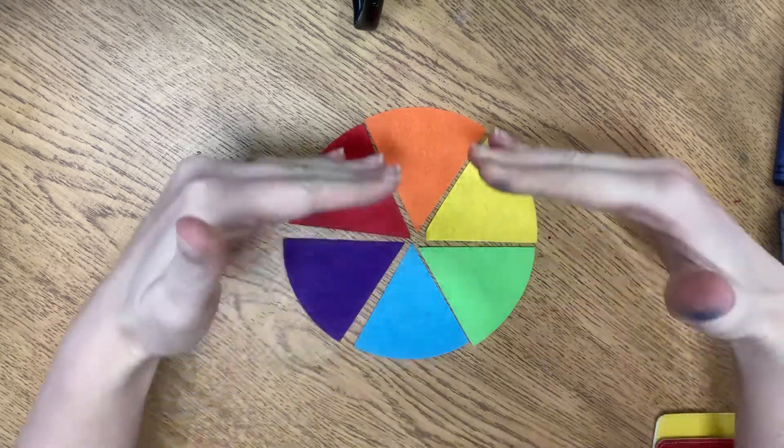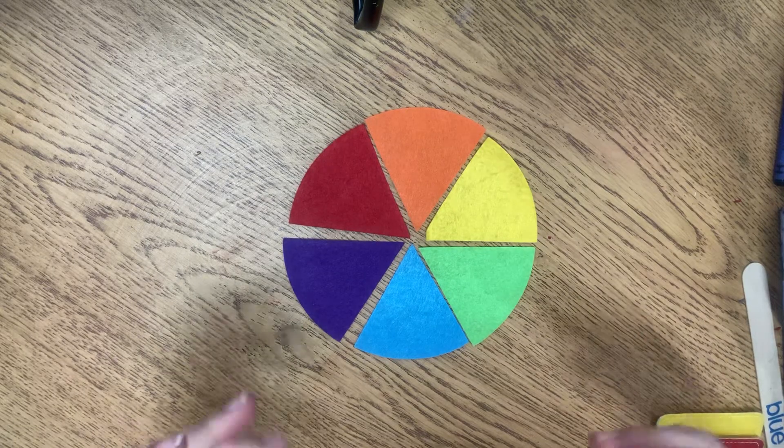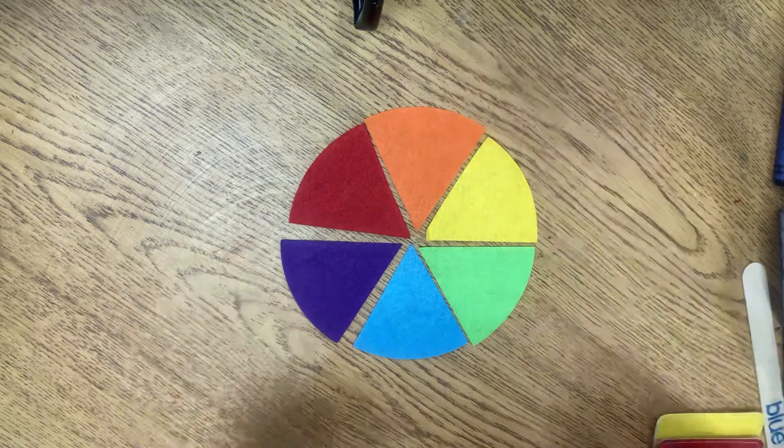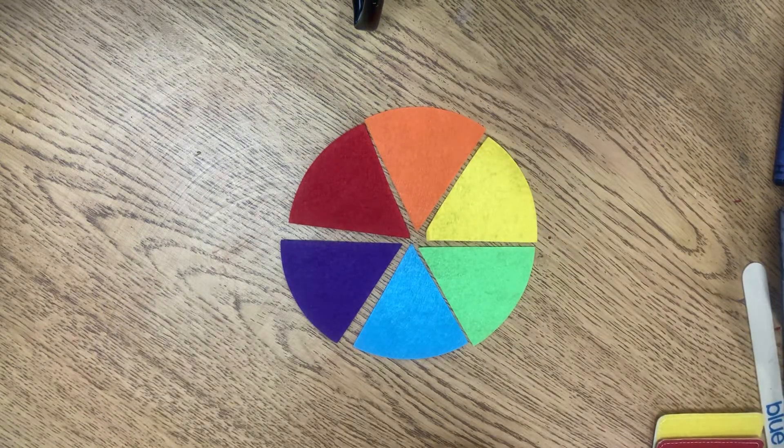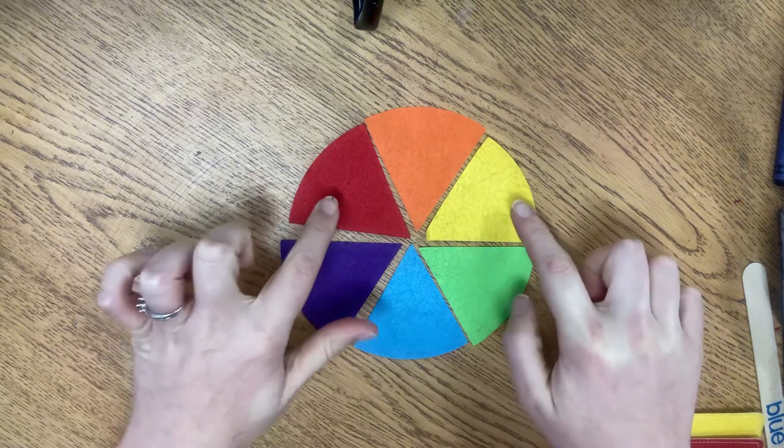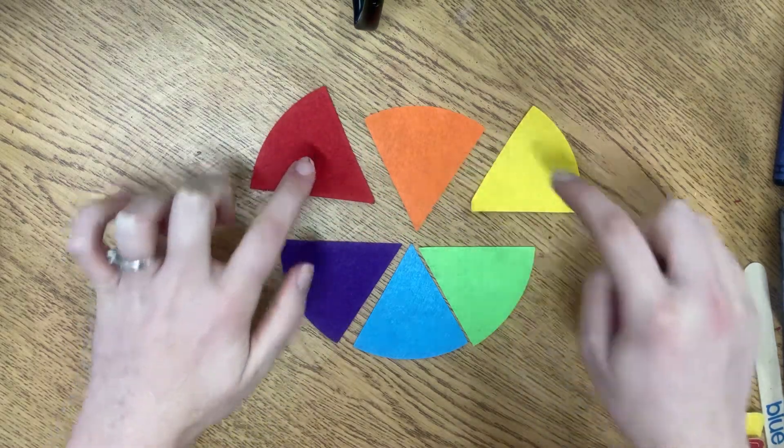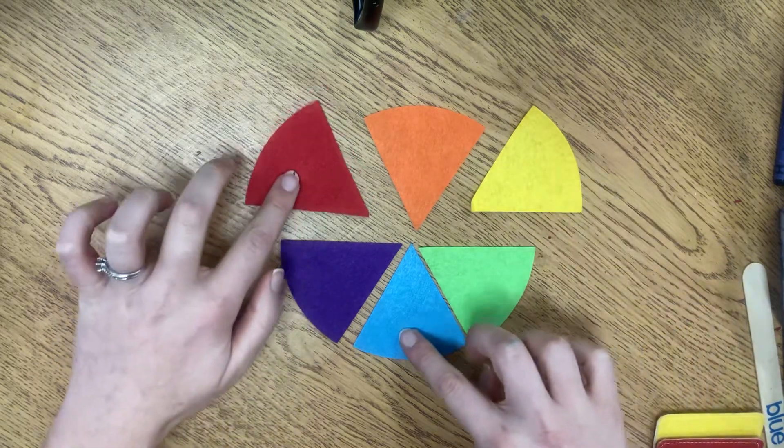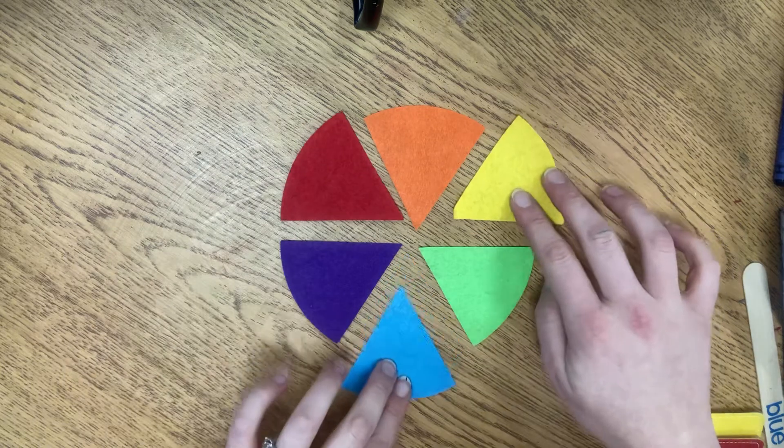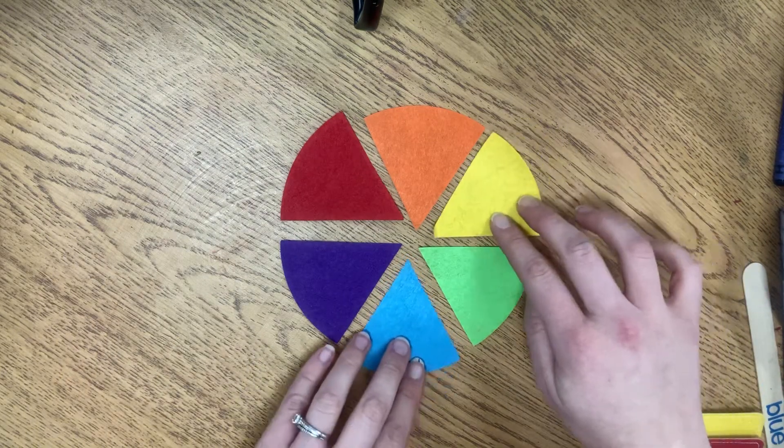It shows us not only our warm and cool colors, it also shows us tips and tricks with our primary colors, our secondary colors, and sometimes it can help us decide what colors we need to mix to make a new color. Right here, I have my primary colors red and yellow, and those would make orange. I also have blue and red that would make my secondary color purple, and blue and yellow that would mix to make green.